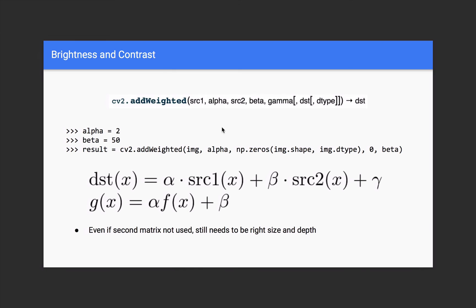Instead of having to set each particular byte with that annoying computation, we're just going to use addWeighted. Alpha is going to be alpha. You still have to put in a valid source 2 — in this case we're going to use a NumPy matrix of zeros, the same shape as the original image. For the beta parameter we pass in zero, and for gamma we actually pass in the original beta. That will successfully reduce this down to our brightness and contrast equation, so we can just use this method call and that will apply brightness and contrast.